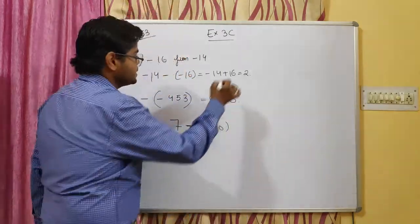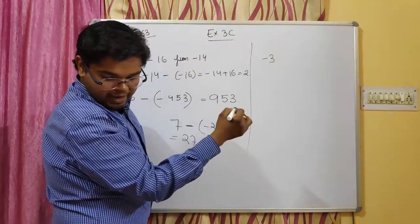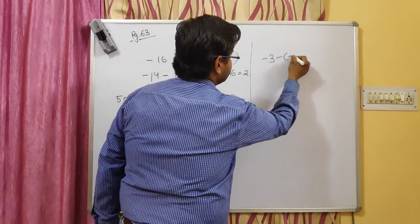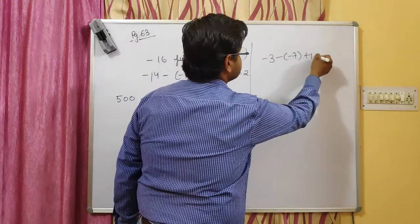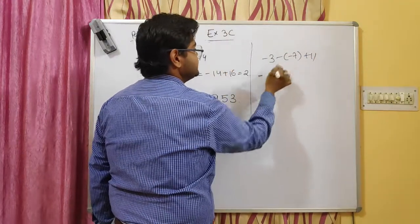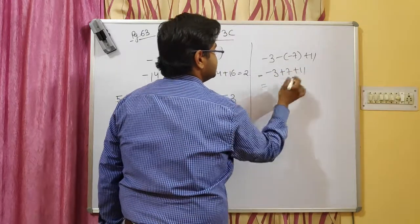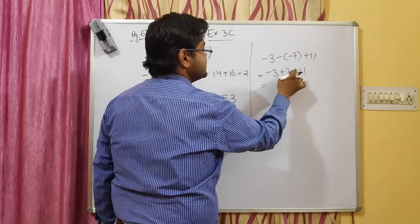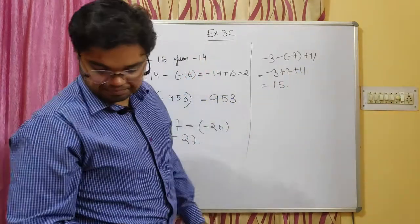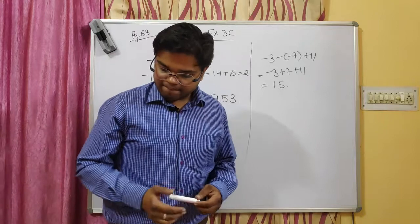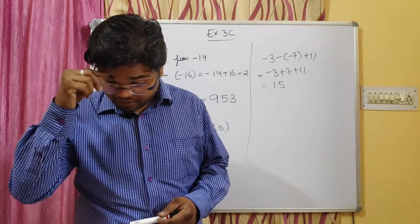Question 5: minus 3 minus of minus 7 plus 11. The minus minus becomes plus, so it is minus 3 plus 7 plus 11. That gives us 7 plus 11 equals 18, and 18 minus 3 equals 15.